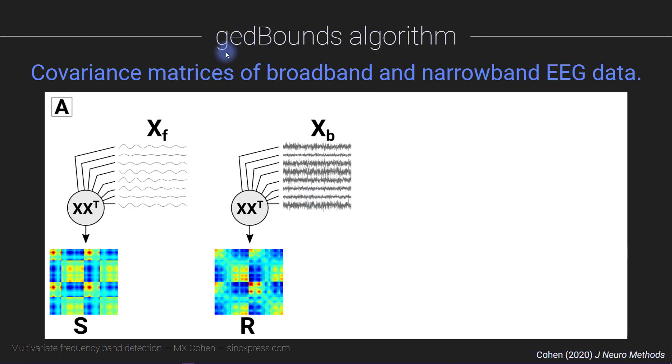Now I'm going to walk you through how this algorithm works. I call this GED bounds, which stands for Generalized Eigendecomposition-Based Boundaries. The first step is to create two covariance matrices from the data. One covariance matrix is based on the broadband data, so non-temporally filtered data, and another covariance matrix is based on narrowband-filtered EEG data. So you see here, this is a depiction of broadband data, X would be the data matrix, and we create a channel-by-channel covariance matrix. Here is exactly the same data from the same individual, the same electrodes, the same time windows, the same task. Everything is the same except this is non-temporally filtered, and this is narrowband-filtered at a particular frequency.